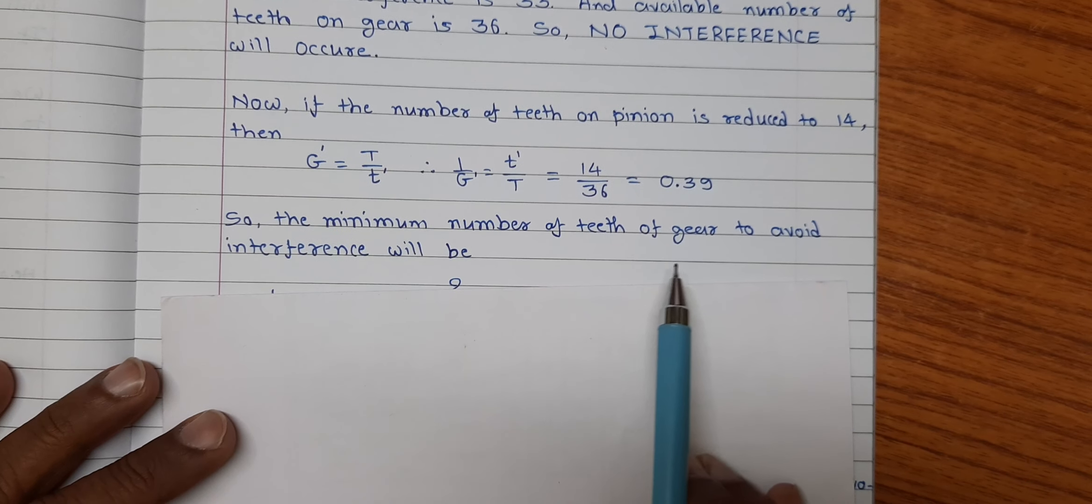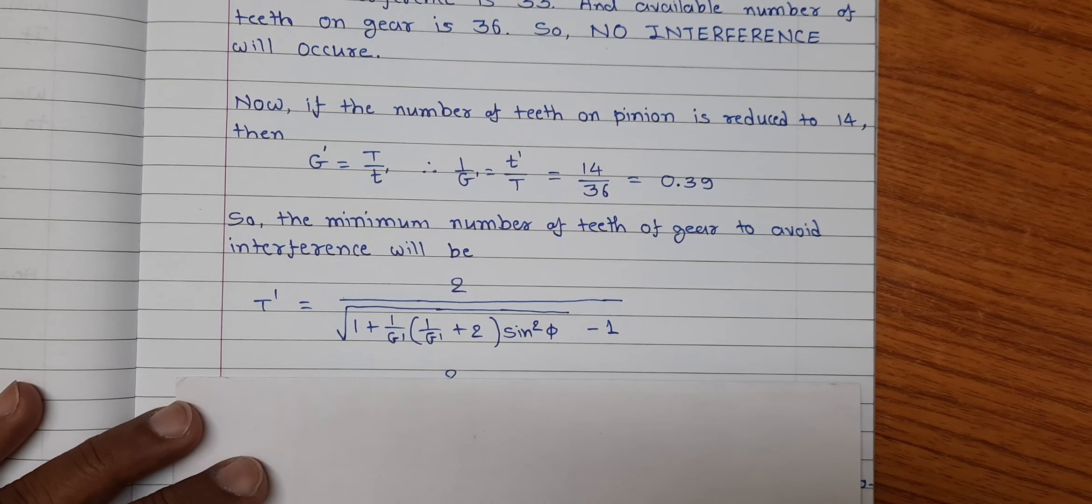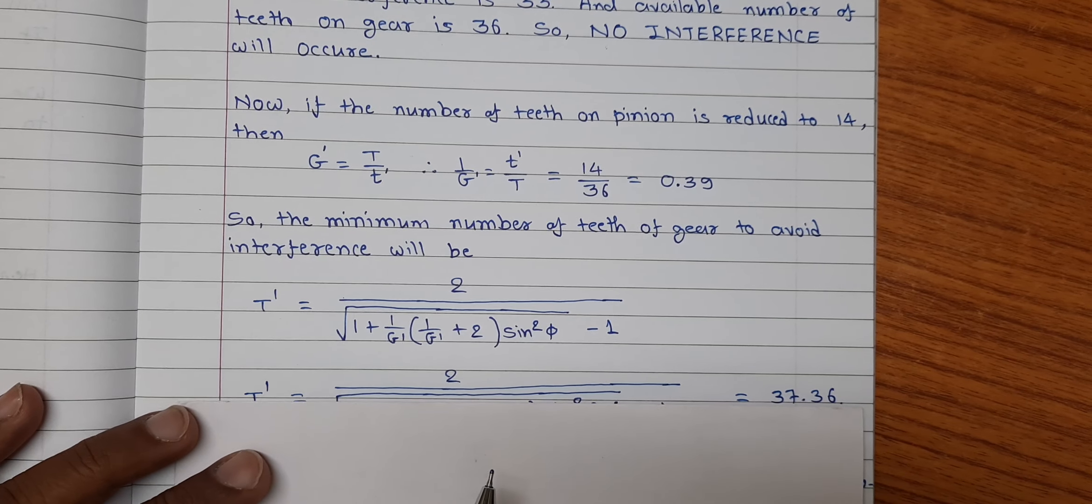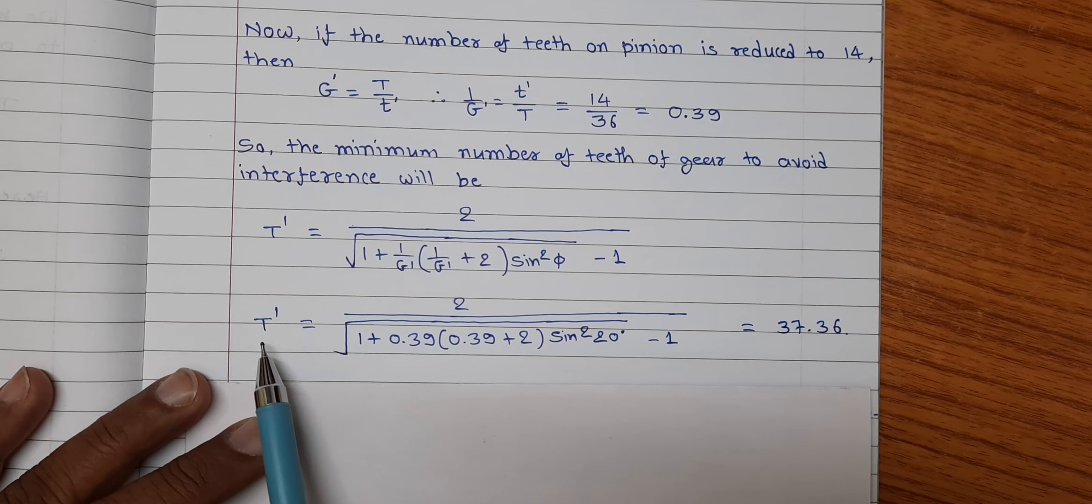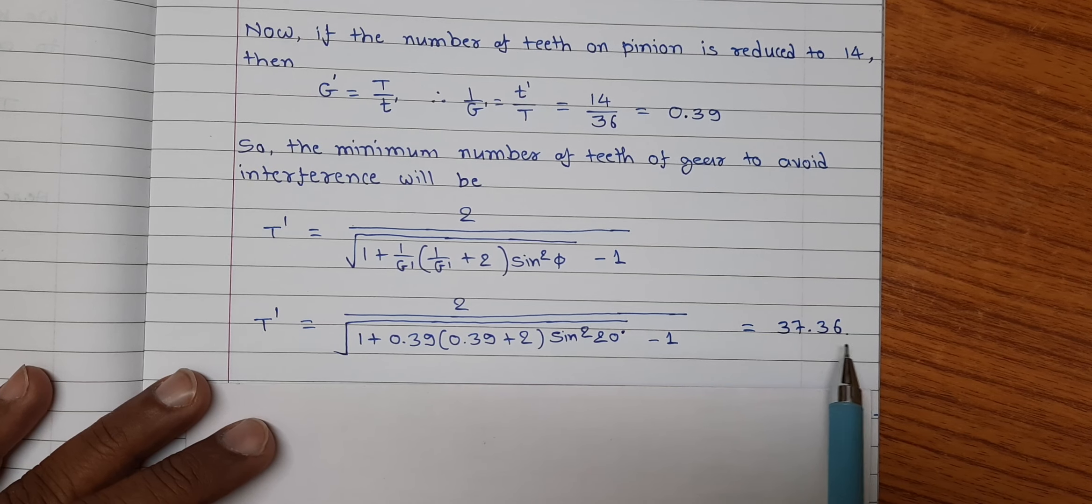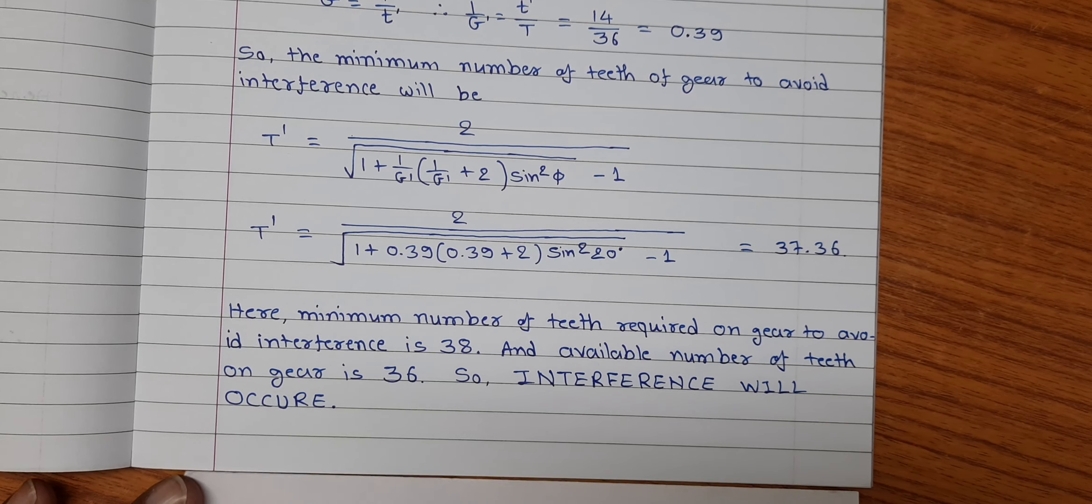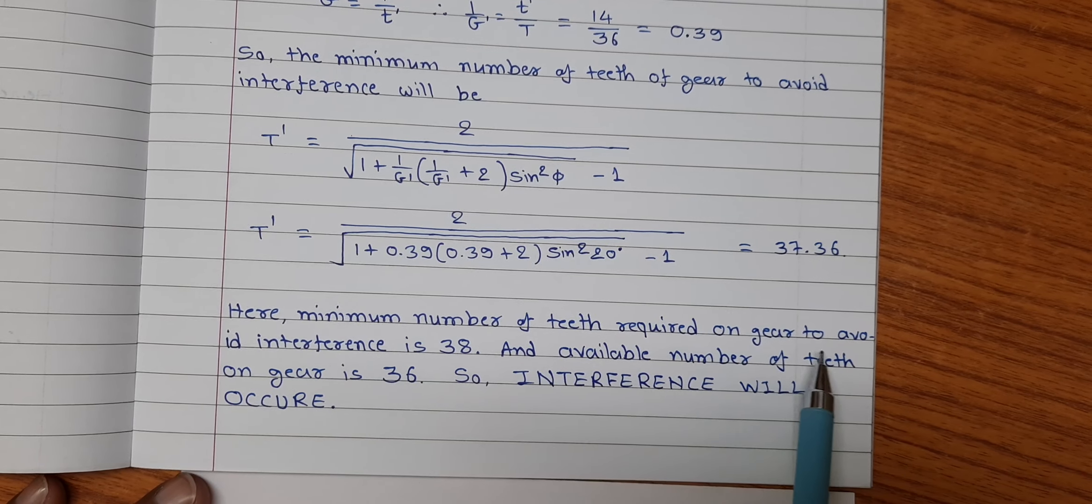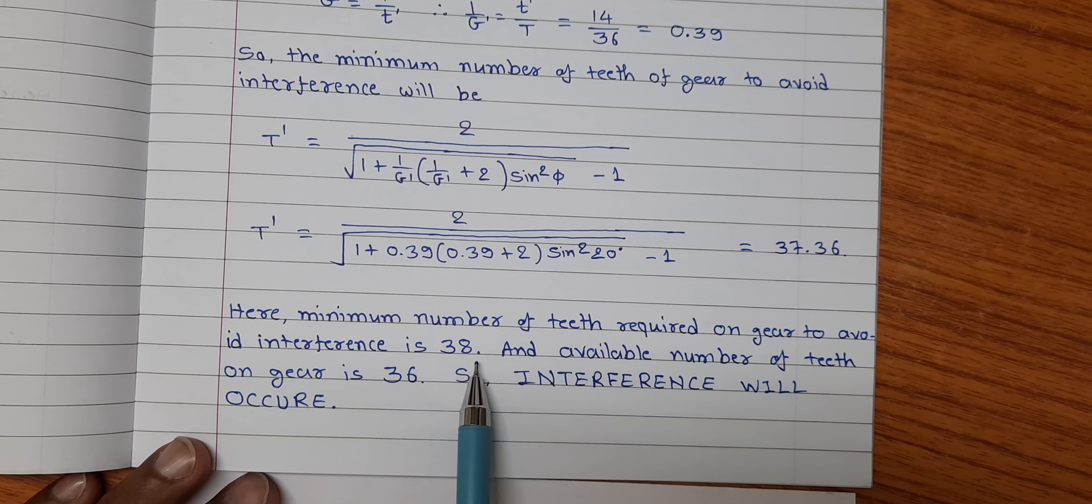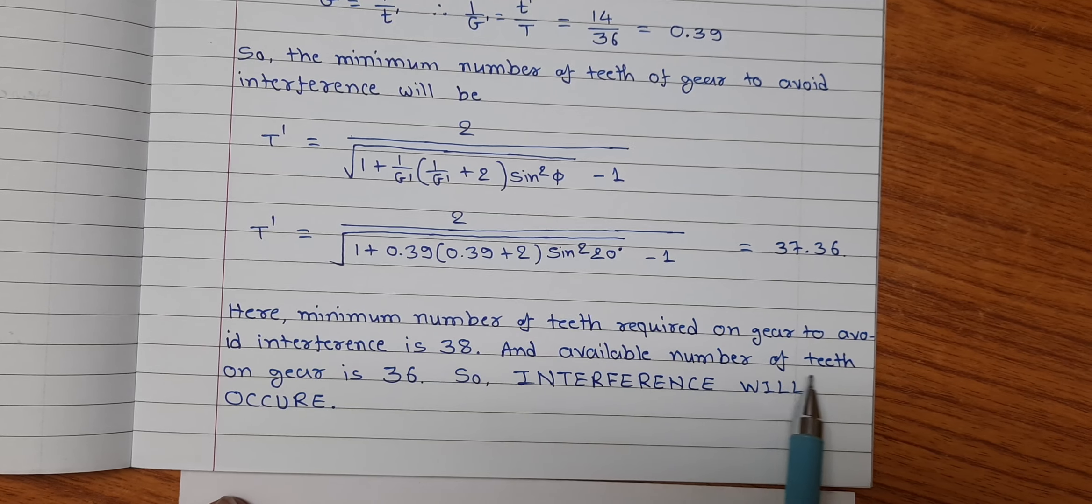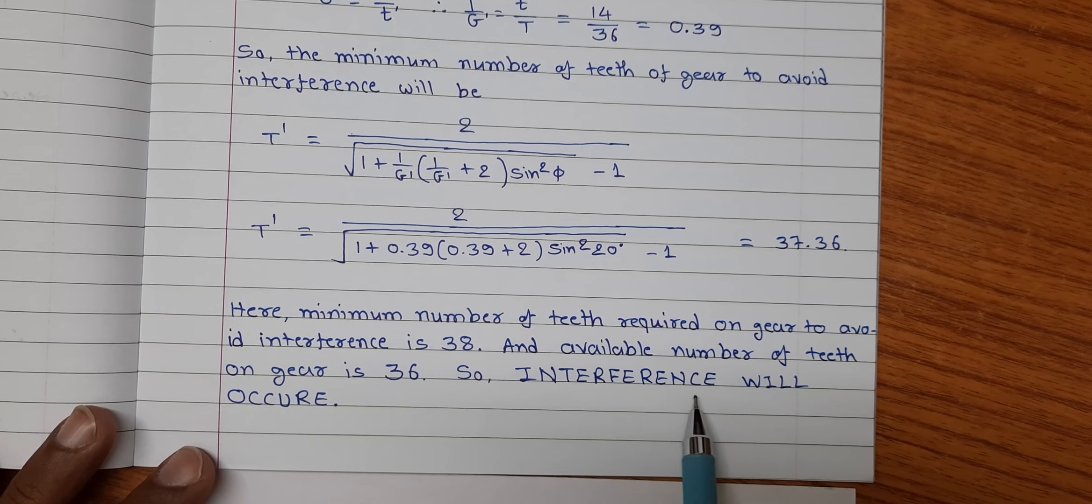So, the minimum number of teeth of gear to avoid interference will be given by this relation. Substituting the value of 1 upon g dash and pressure angle phi, we found t dash is equal to 37.36. Here, the minimum number of teeth required on gear to avoid interference is 38. And the available number of teeth on gear is 36. So, the interference will occur.